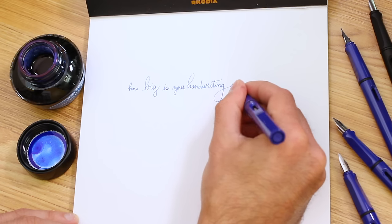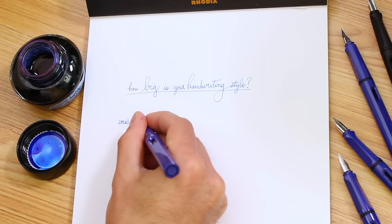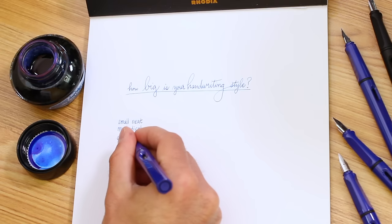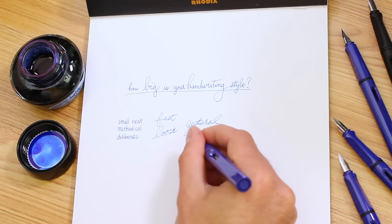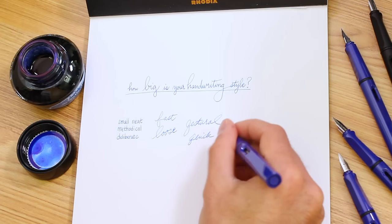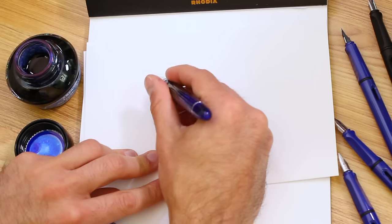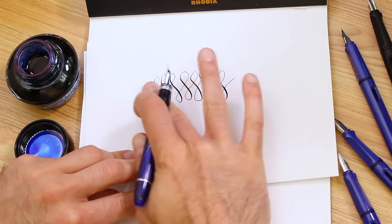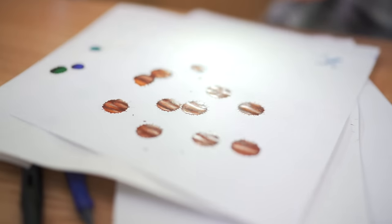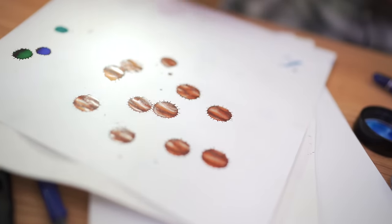How large is my typical handwriting? Is it big and bold or small and neat? How quickly do I write? More methodical and deliberate or loose and fast? Do I prefer a butter smooth nib or writing with feedback? Is dry time a concern? Do I savor seeing the ink shading, sheen, shimmer on the page?